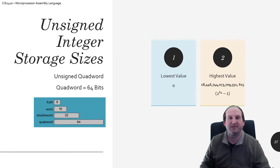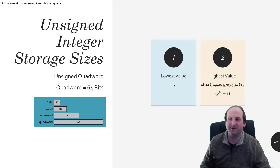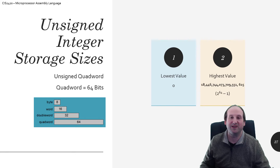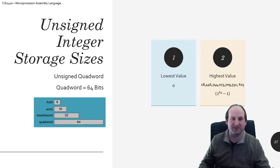Here is the final variation: an unsigned quad word, 64 bits of storage — 8 bytes of storage. The minimum value is zero. And if all 64 bits are set, you get a very large number: 2 to the 64th minus 1, which is 18 quintillion, 446 something, down to 615 at the end. A very large number. We can pretty much store anything we can imagine inside of there, though mathematically speaking, that's not even close to infinity — not enough to fully map real mathematics onto a silicon chip.